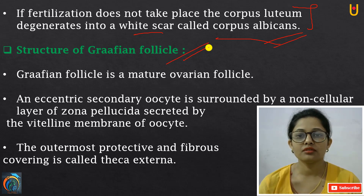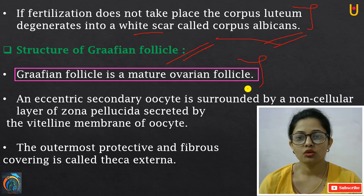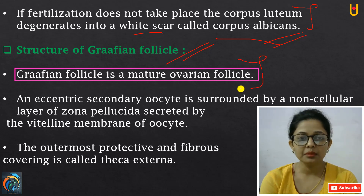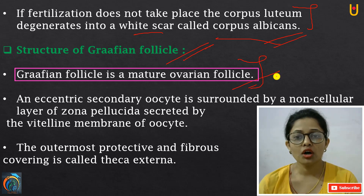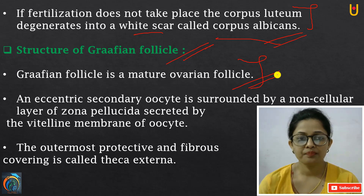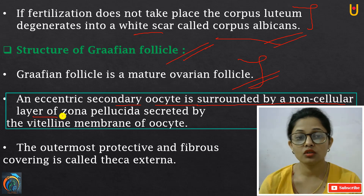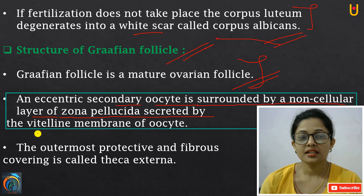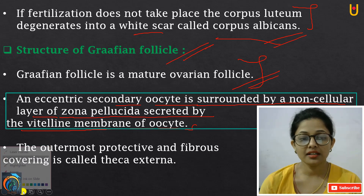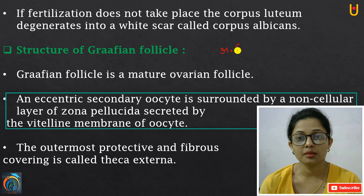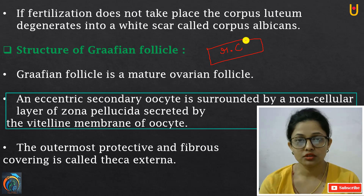The Graafian follicle is a mature ovarian follicle. An eccentric secondary oocyte is surrounded by a non-cellular layer of Zona Pellucida, secreted by the vitelline membrane of the oocyte. Oocytes are reproductive cells.